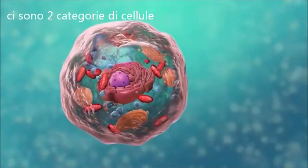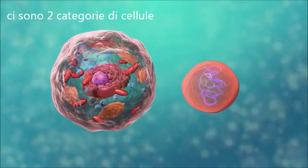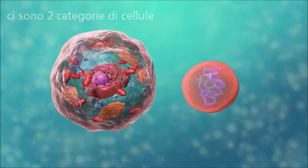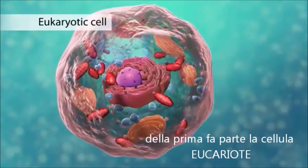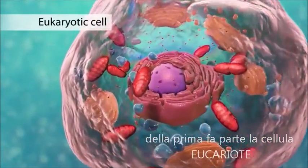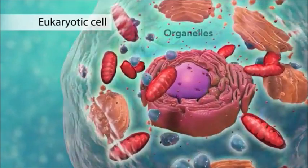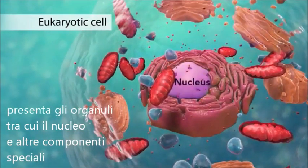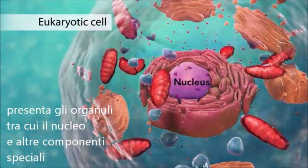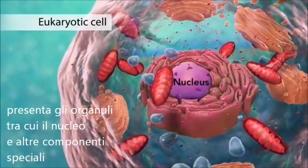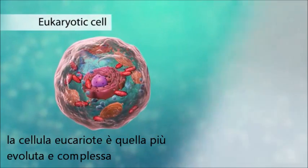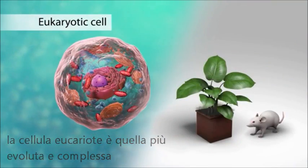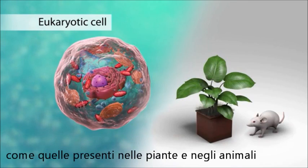There are two broad categories of cells. The first category is eukaryotic cells. They have organelles which include the nucleus and other special parts. Eukaryotic cells are more advanced complex cells such as those found in plants and animals.